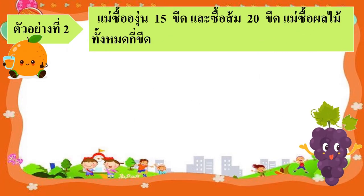ต่อมาเรามาดูตัวอย่างที่ 2 แม่ซื้ออังุ่น 15 ขีด และซื้อส้ม 20 ขีด แม่ซื้อผลไม้ทั้งหมดกี่ขีด ก่อนอื่นคุณน้องจะพาเด็กๆไปวิเคราะห์โจทย์ปัญหากันก่อนนะคะ